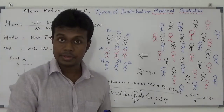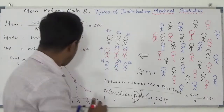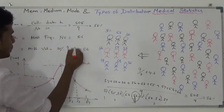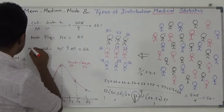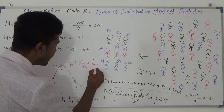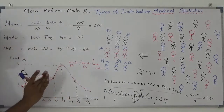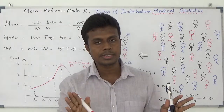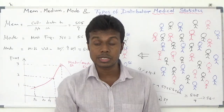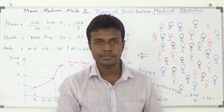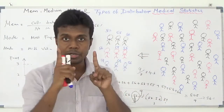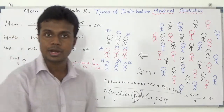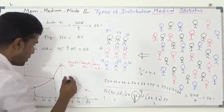In this graph, carefully look — your median is here, your mode is here. Median is 56, mode is also 56, and mean is also 56.1. Your mean, median, and mode all come together into a single position. If you find a curve like this — where mean, median, and mode all come into a single highest position — you are going to call it normally distributed. Your age group here is normally distributed.